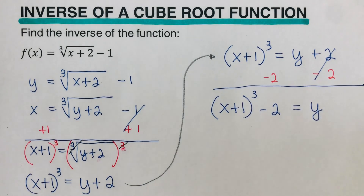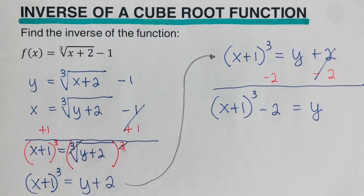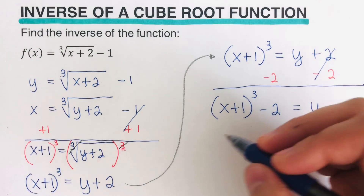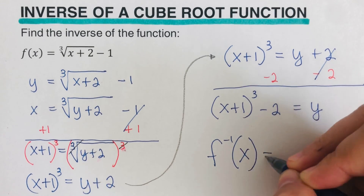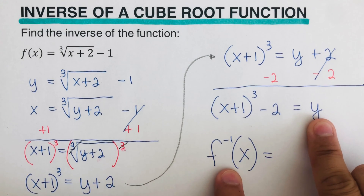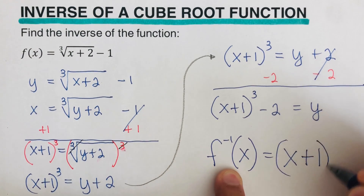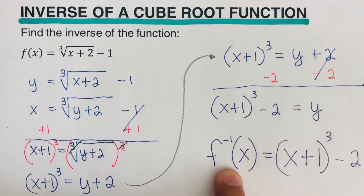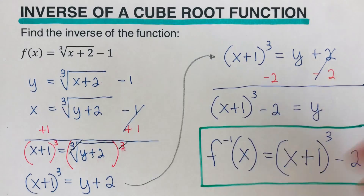Now we're ready to move on to the third step. The third step is to replace y of the equation solved in step 2 with f⁻¹(x), which is the notation for inverse. So we rewrite this as: f⁻¹(x) is equal to x plus 1, cubed, minus 2. And this is the inverse of this function.